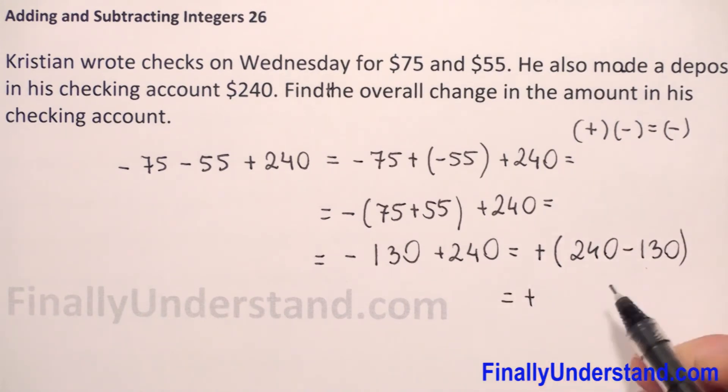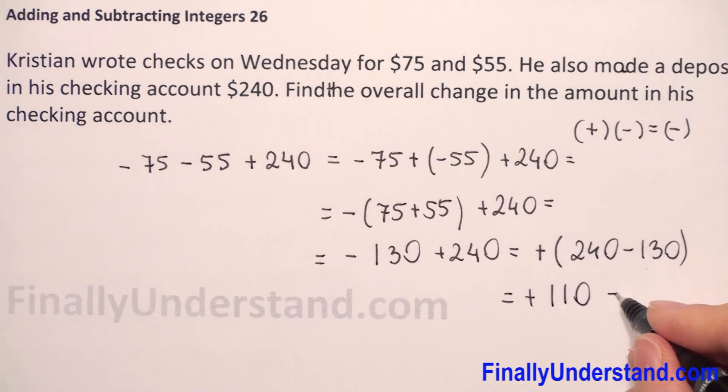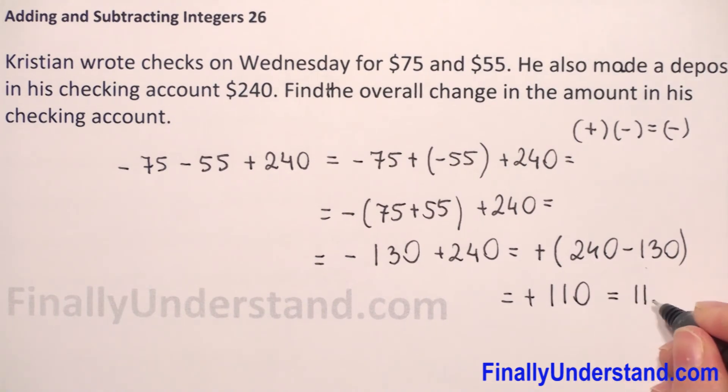Positive sign we copy. 240 minus 130, so this is 110. Positive sign we don't have to write, so we have 110.